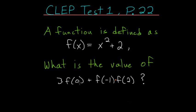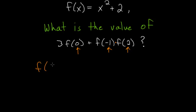And to do that, we just need to plug these values in for f. So if we plug in f of 0, we get 0 squared plus 2, which is just 2.